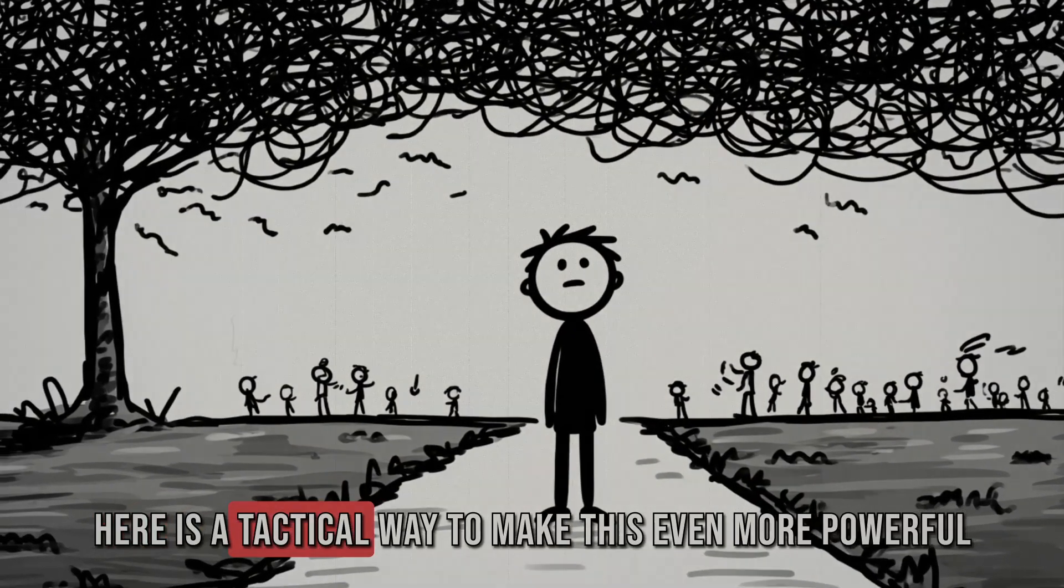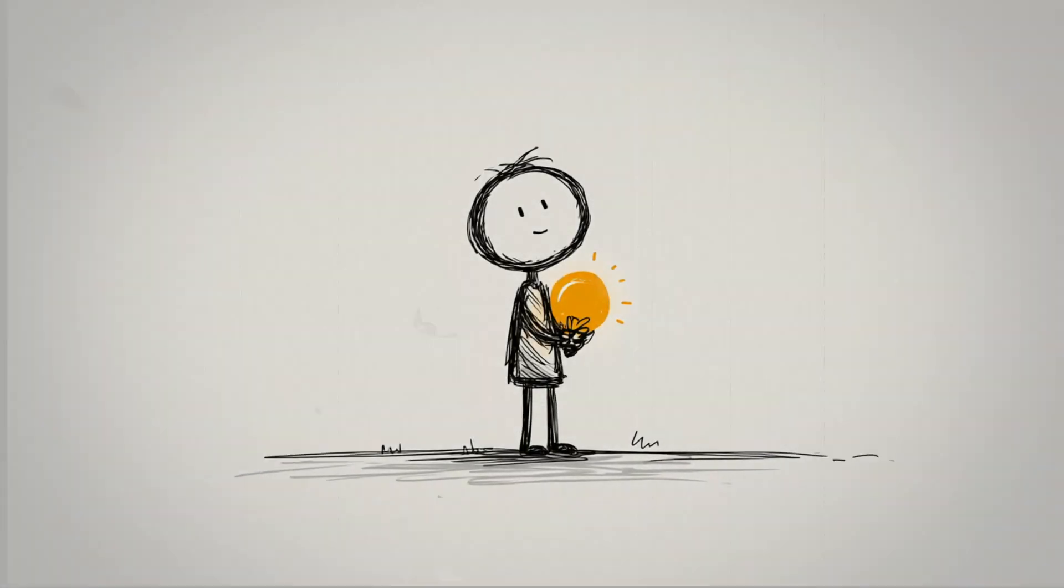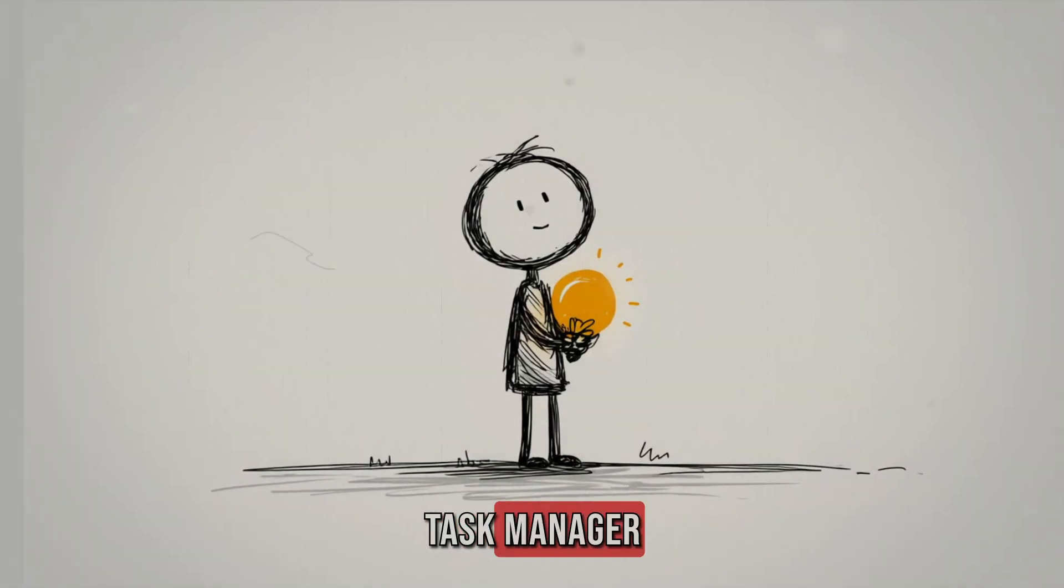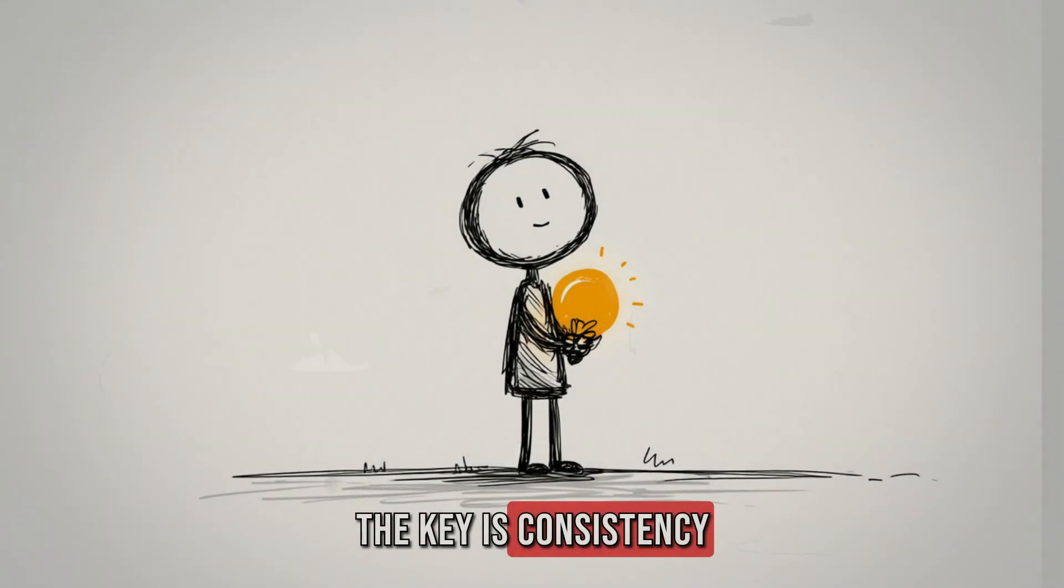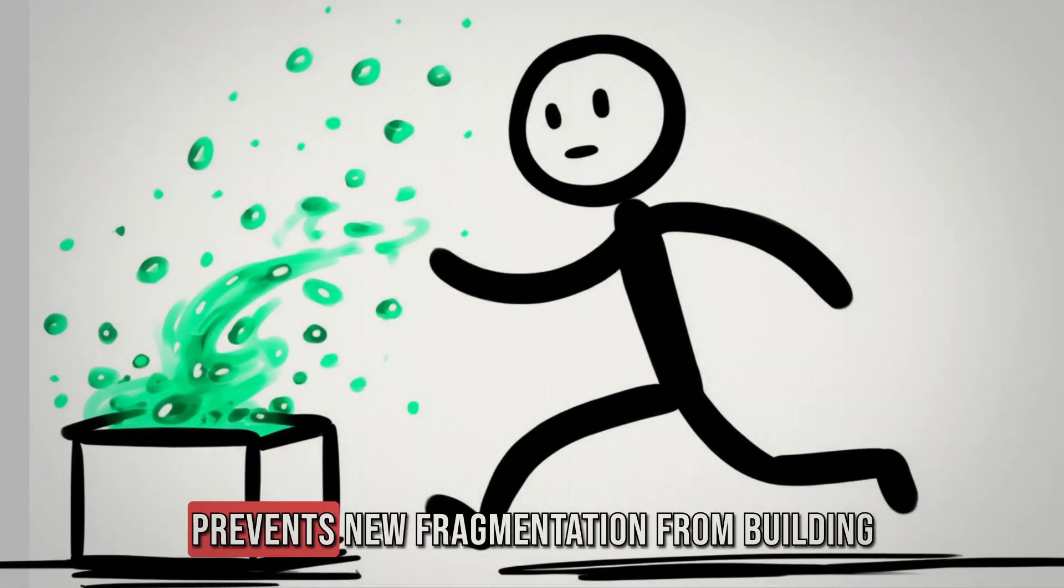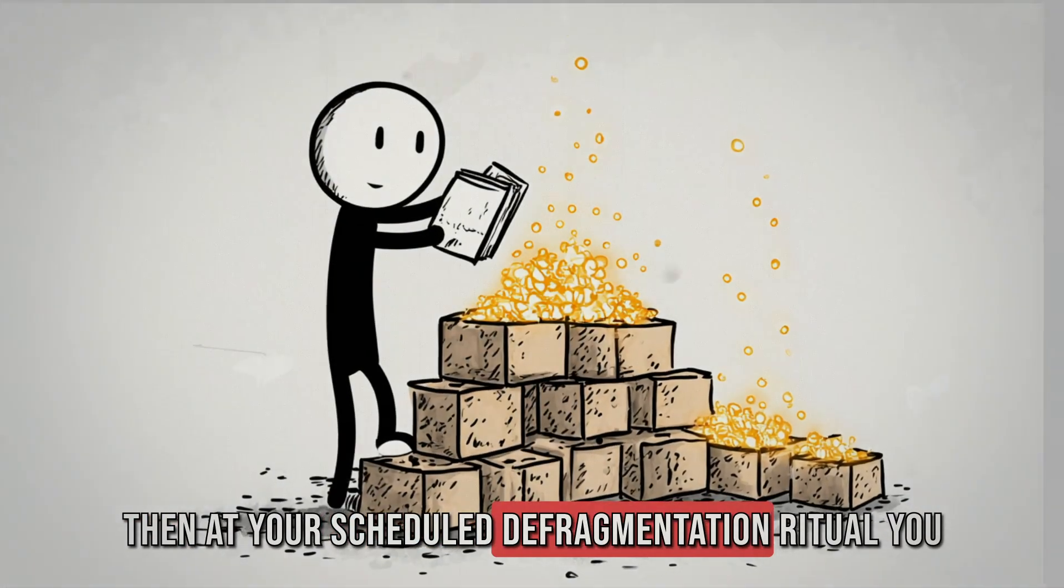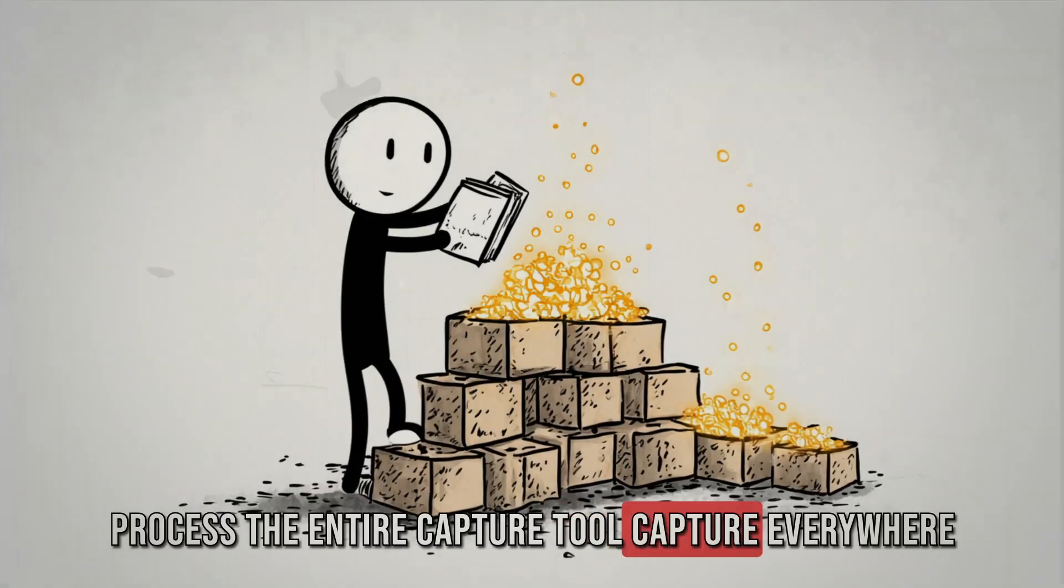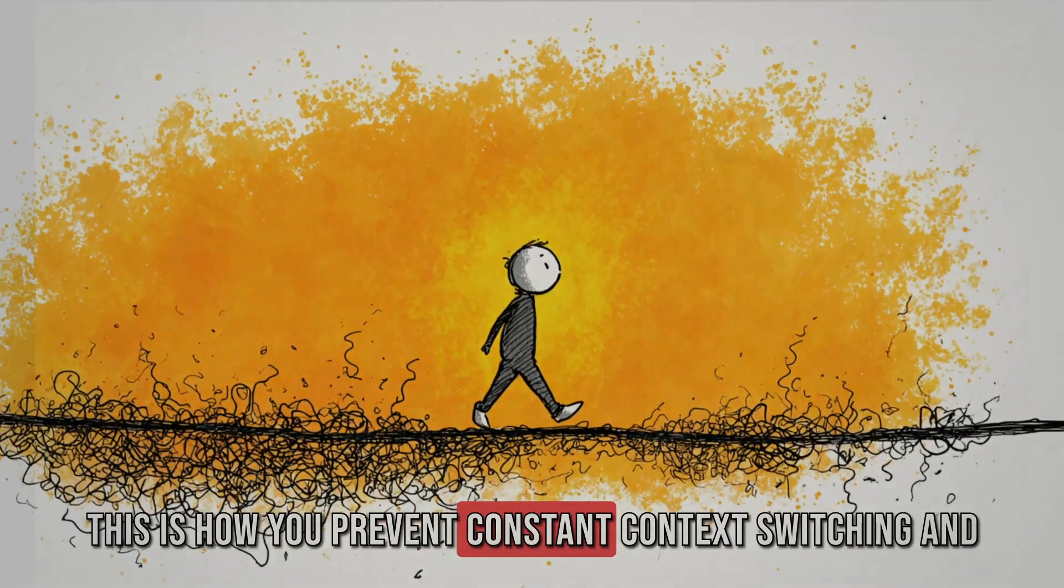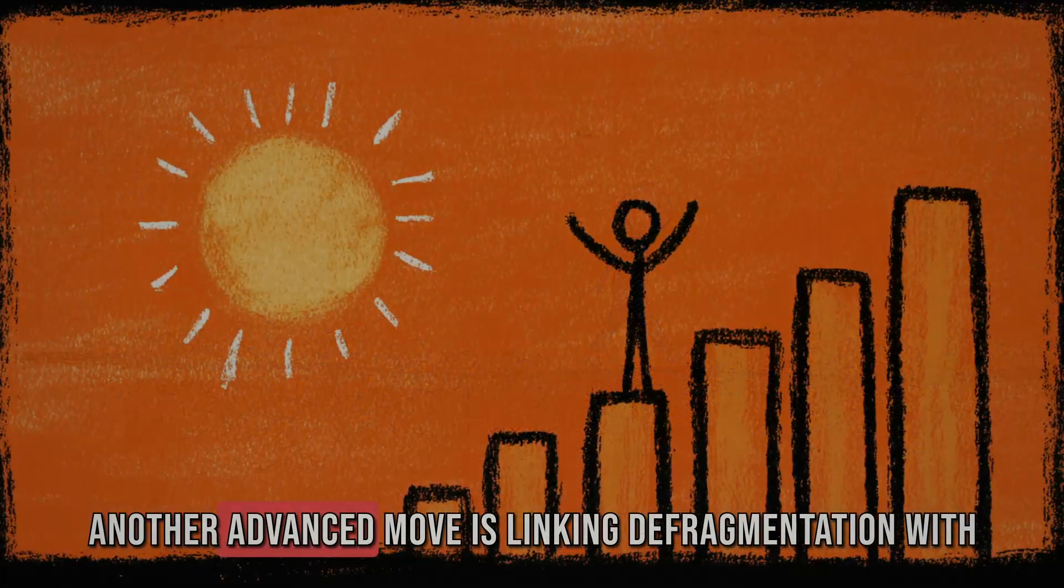Here is a tactical way to make this even more powerful. Create a central capture tool that is always with you. It can be a notes app, a pocket notebook, or a digital task manager. The key is consistency. Every time a loop arises, capture it instantly. This prevents new fragmentation from building. Then, at your scheduled defragmentation ritual, you process the entire capture tool. Capture everywhere. Process at one time. This is how you prevent constant context switching and keep your mind clean during the day.